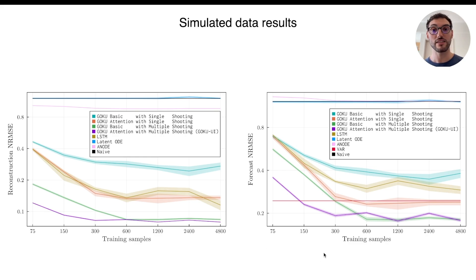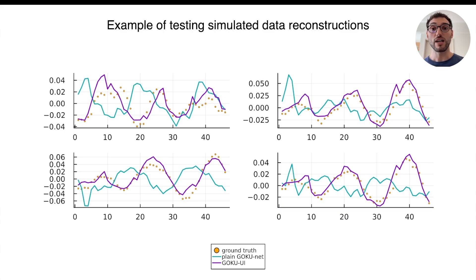Turning to the forecast task, with a fixed 20-step forecast horizon, at the lowest end of the training data size, VAR achieves the best performance. It is expected that simpler statistical methods like VAR can outshine more complex machine learning models in scenarios with scarce training data. However, as we expand our dataset beyond 150 samples, GokuNets trained with multiple shooting take the lead consistent with the trend from the reconstruction task. Just for having a visual sense of the reconstructions, here we have a few examples from the Stuart-Landau test set. The orange dots show the ground truth, the turquoise curve represents the plain GokuNet, while the violet one corresponds to Goku UI. It's clear from this qualitative comparison that Goku UI provides a reconstruction that's much more aligned with the real data points.